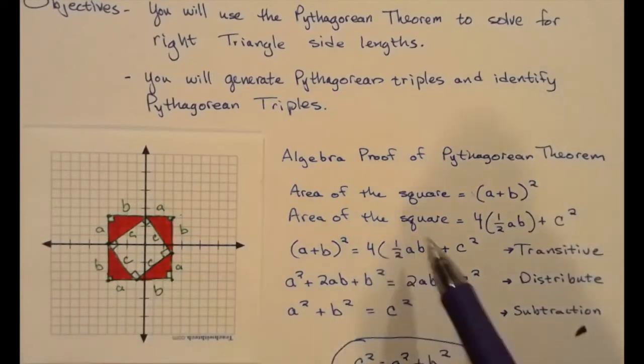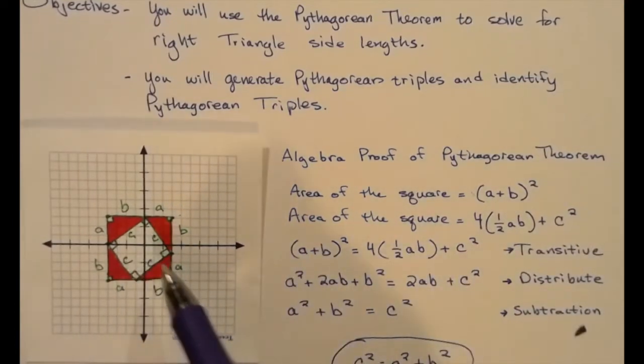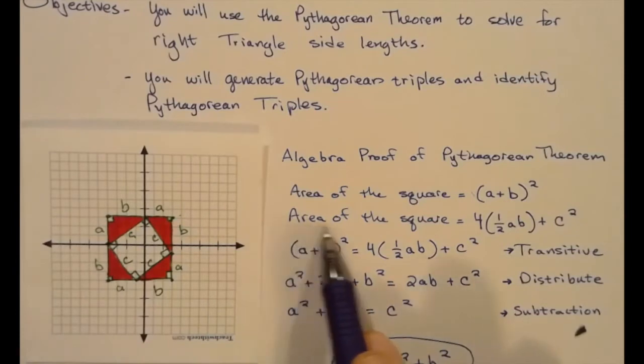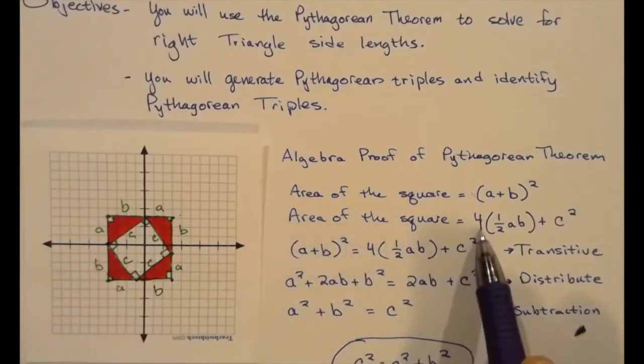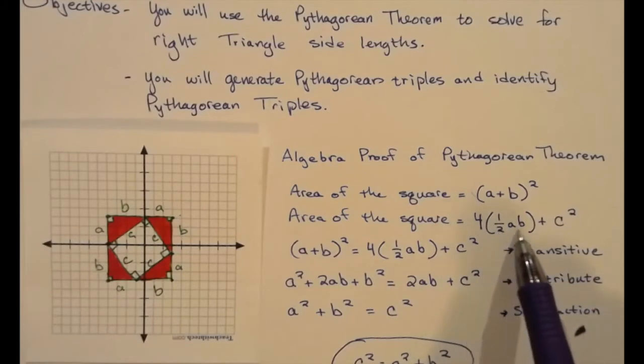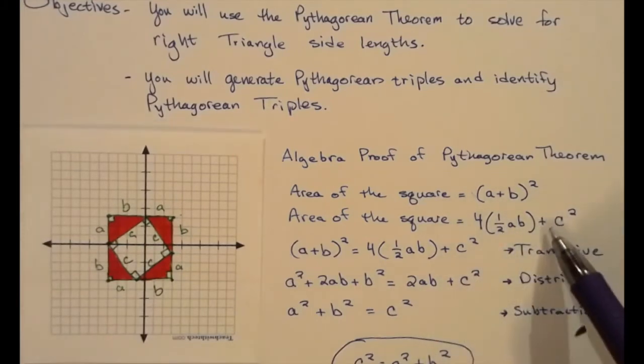Also, we could kind of break the area up into the sum of the area of the five little polygons here. So the area of the square is also four of the area of these little red triangles, ½ab using the triangle area formula, plus the square in the middle, c².